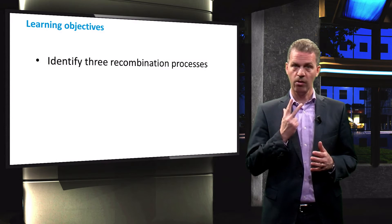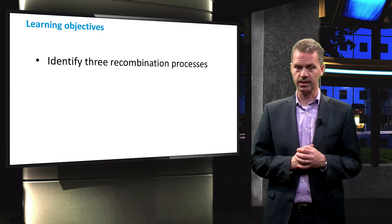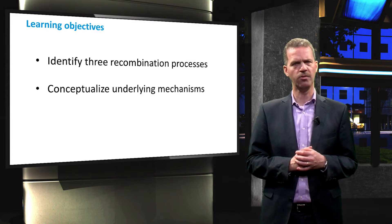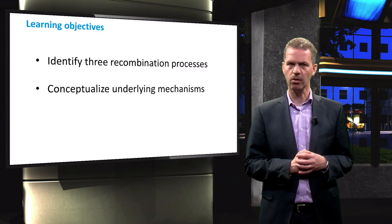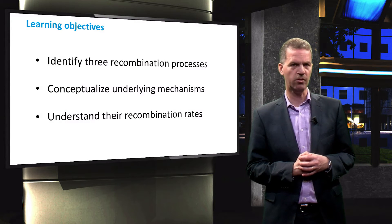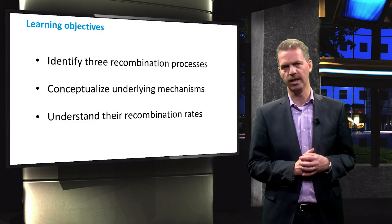First, we will identify three different recombination processes. Subsequently, we will conceptualize the underlying mechanism of each recombination process, and finally we will discuss the recombination rate of each process and how to calculate them.